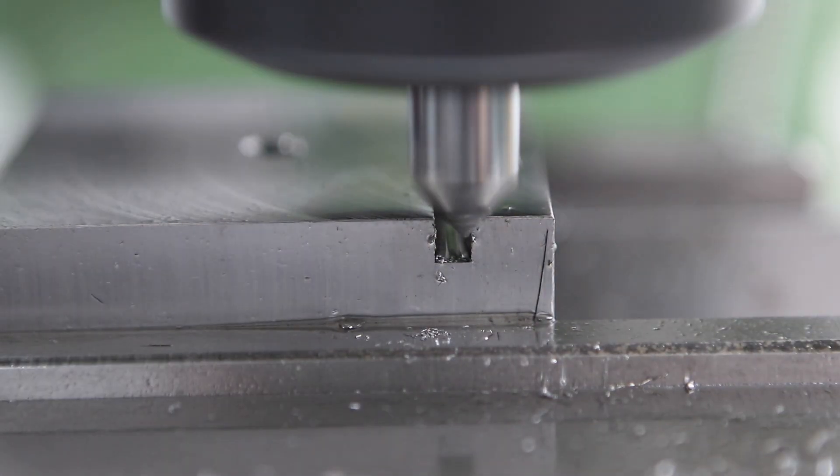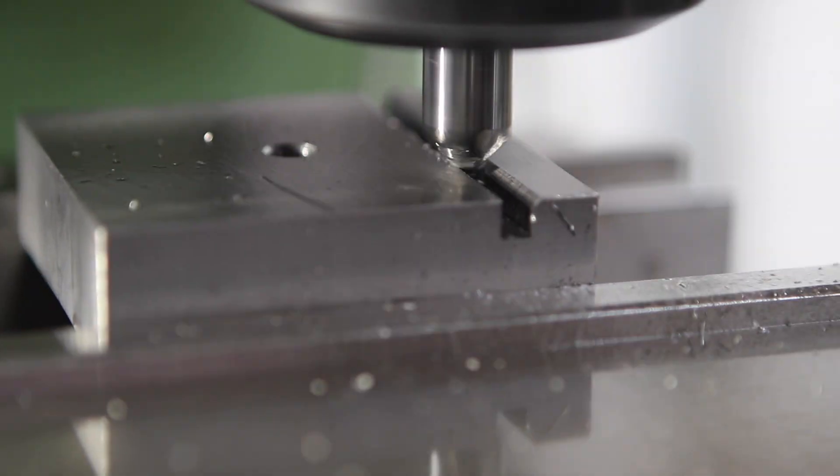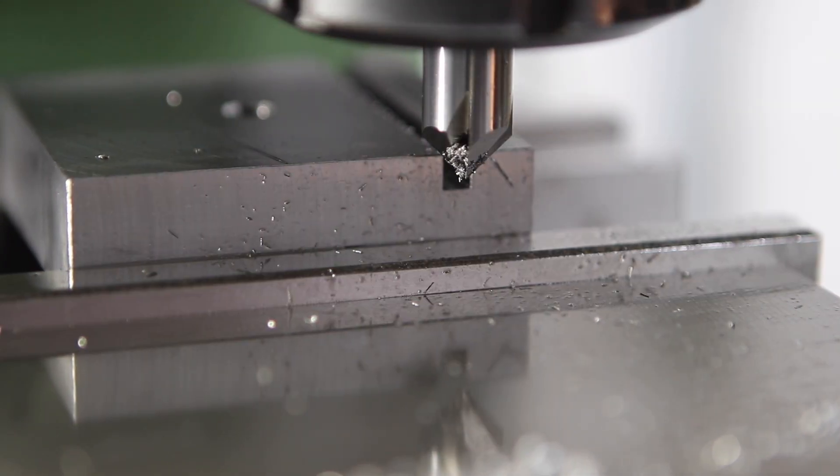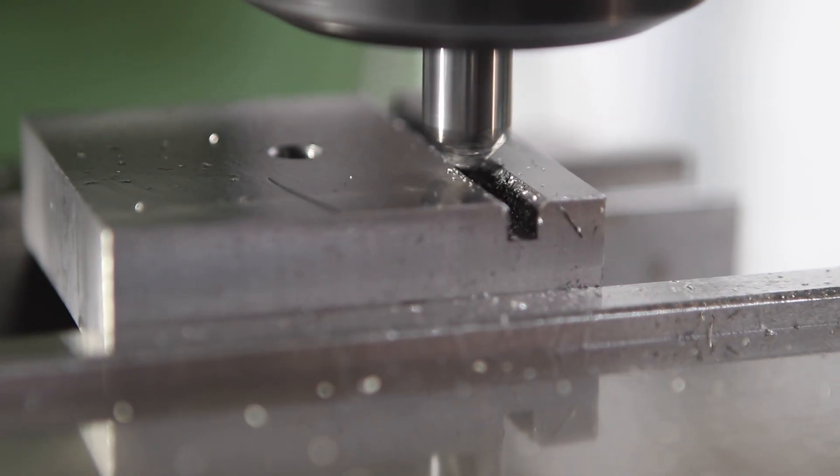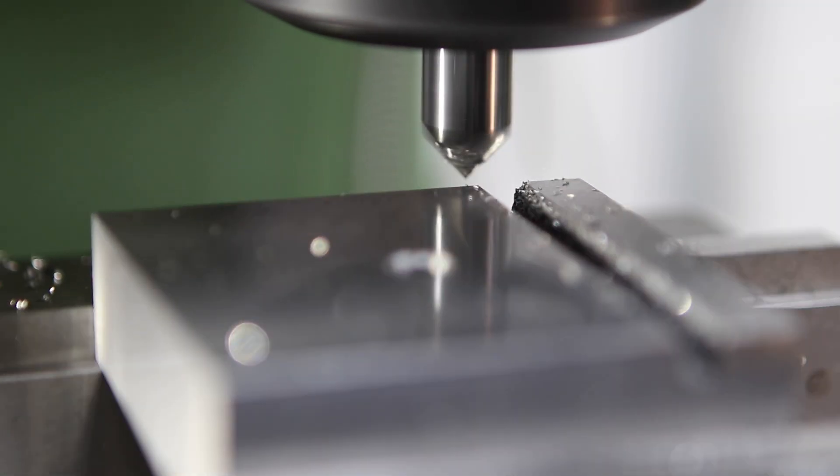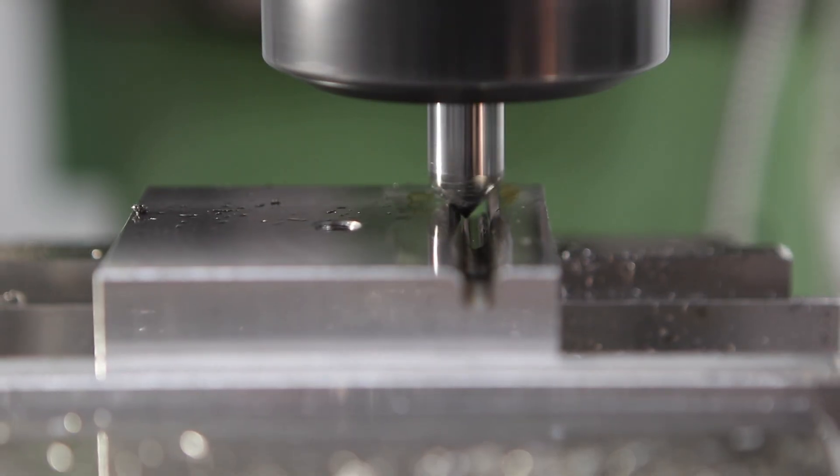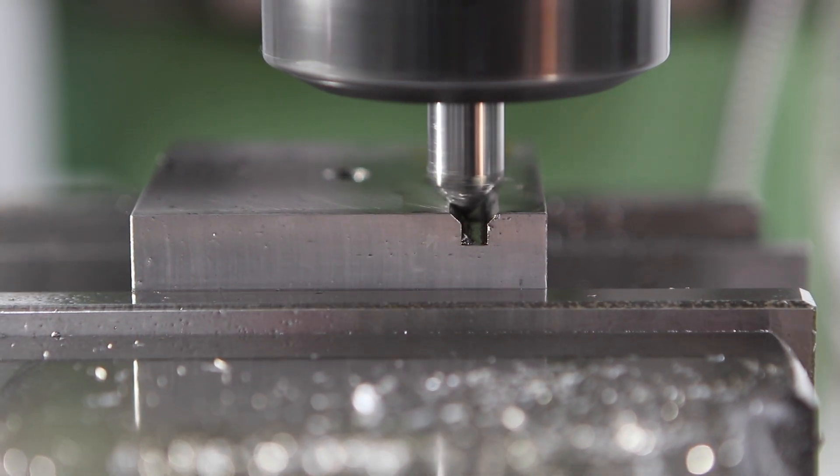I've swapped out the slot drill for a 45 degree chamfer mill and I've unlocked the x-axis in the machine. I do have the position of that slot in the DRO so what I'm doing is I'm moving left and right by equal amounts to cut the two sides of the V groove there.